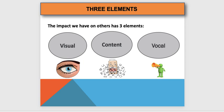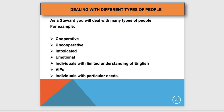As a steward you will deal with many types of people: cooperative, uncooperative, intoxicated, emotional, individuals with limited understanding of English — increasingly common at clubs with foreign players who attract international fans — VIPs, and individuals with particular needs. Each type requires a different approach.